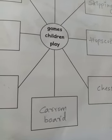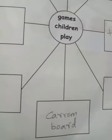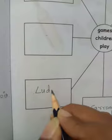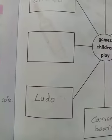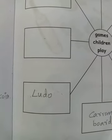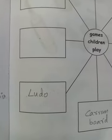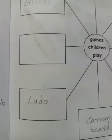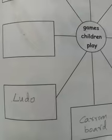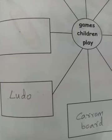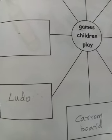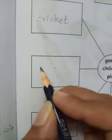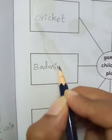Then ludo - I think ludo is everyone's all-time favourite, and now it can be played on your mobile also. Ludo: L-U-D-O. You all know it - four members can play, with four colours: red, green, yellow, and blue.